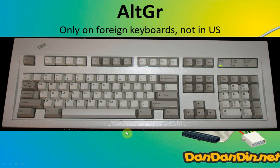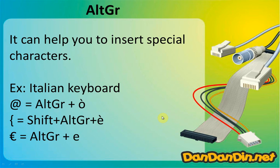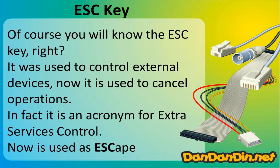AltGr may not be on your keyboard because it is only on foreign keyboards. If you press this button, you can access some special characters. Just press AltGr and the relevant key to get special characters like special brackets, the Euro symbol, and others. The ESC key — of course you know it — is used to cancel an operation. Just press ESC and it will cancel.